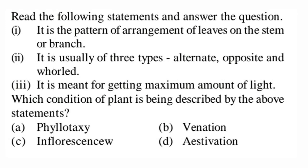Next question: the statements describe — statement 1: it is the pattern of arrangement of leaves on the stem or branch. Statement 2: it is usually of three types — alternate, opposite, and whorled. Statement 3: it is meant for getting maximum amount of light. Which condition of plant is described? Venation is arrangement of veins in lamina; inflorescence is the modified shoot bearing flowers; estivation is arrangement of sepals or petals in a floral bud. The correct answer is phyllotaxy — option A.